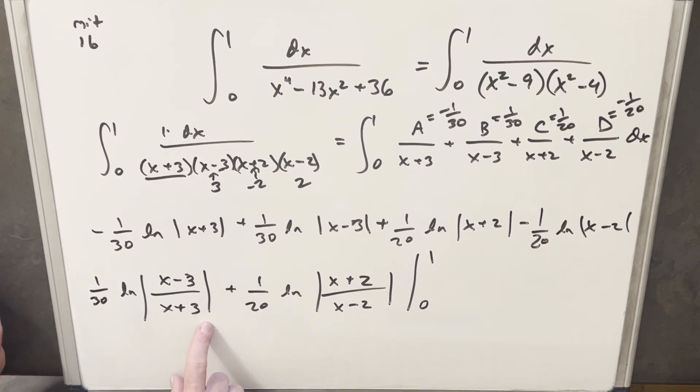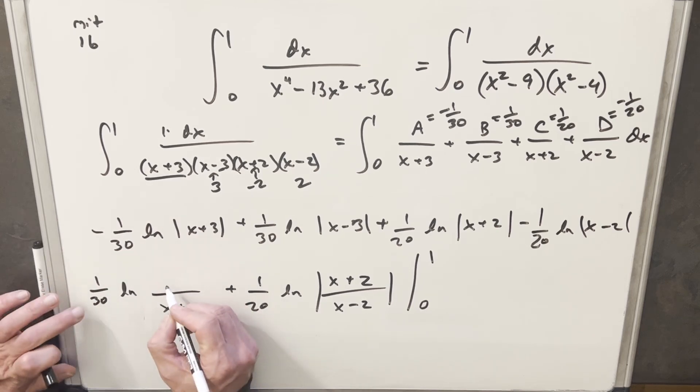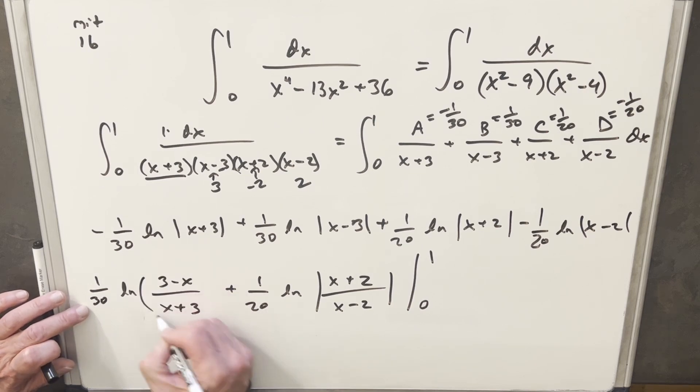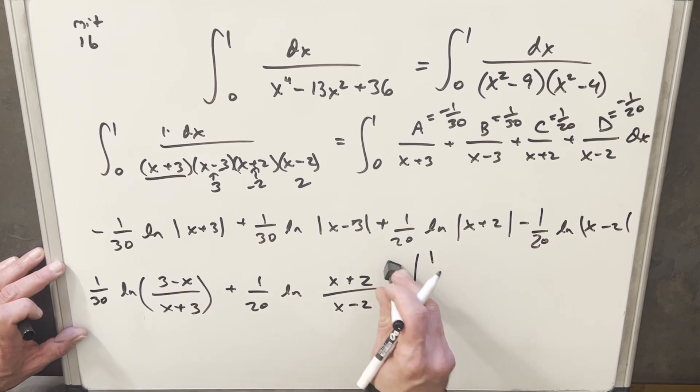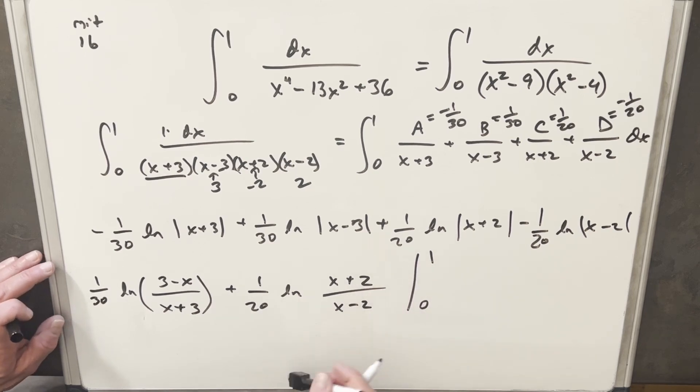Now before I evaluate this, I think I'm gonna deal with the absolute value first, because you'll notice between 0 and 1, this is always gonna be negative, right? Like if you plug a 1 in here, you get minus 2. So the absolute value is gonna flip it. So what I'm gonna do is remove my absolute value here, and I'm just gonna reverse the sign on this. Instead of being x minus 3, I'm gonna write it as 3 minus x. And then I'm gonna do the exact same thing here, because again, if we plug a 1 in, and everything from 0 to 1, this is gonna be negative. So I'm gonna reverse the sign on this and write it as 2 minus x.